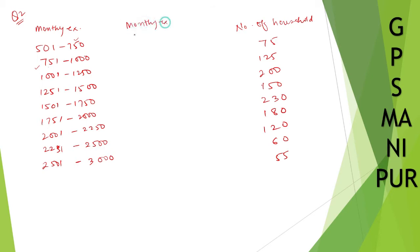Monthly expenditure in continuous class will be 500.5 to 750.5. You reduce by 0.5 and increase by 0.5. Similarly here you reduce by 0.5, so it will be 750.5, and this one you reduce by 0.5, that will be 1000.5. This one you reduce by 0.5, that will be 1000.5, and this one you increase by 0.5, that is 1250.5.